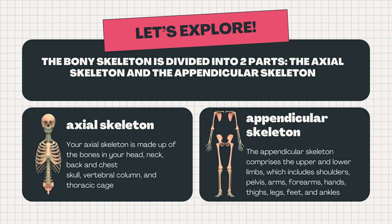The axial skeleton is made up of the bones in your head, neck, back, and chest — the skull, vertebral column, and thoracic cage.